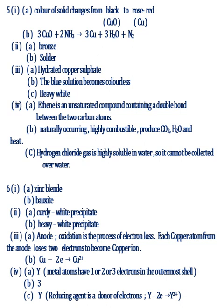Question 6. Part 1: A Zinc blend, B Bauxite. Part 2: A Curdy white precipitate, B Heavy white precipitate. Part 3: A Anode. Oxidation is the process of electron loss. Each copper atom from the anode loses two electrons to become copper ion. B The equation is given.